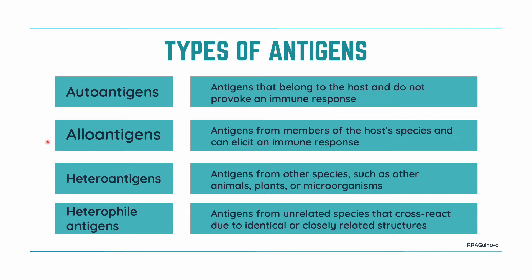Next, we have our alloantigens. These are antigens from members of the host's species and can elicit an immune response. A very good example of our alloantigens are the ABO antigens in our blood. Next, we have heteroantigens, which are antigens from other species such as plants, animals, and microorganisms. Usually, heteroantigens are much more immunogenic than alloantigens.